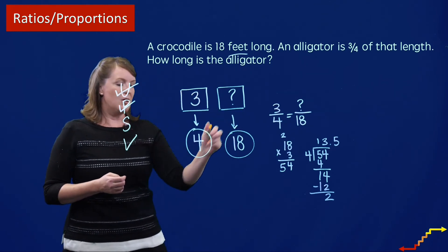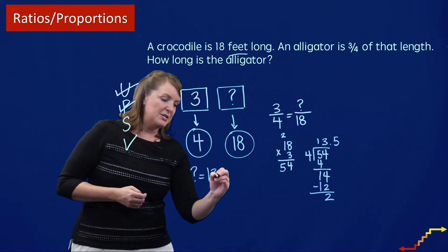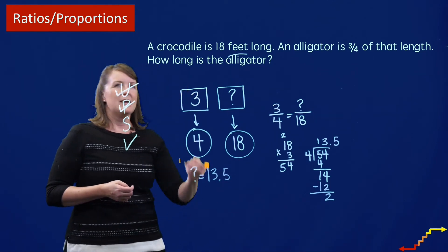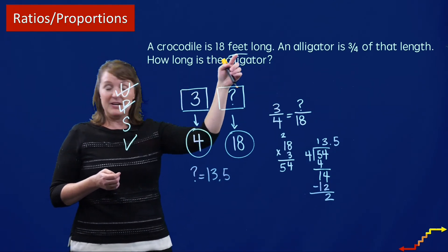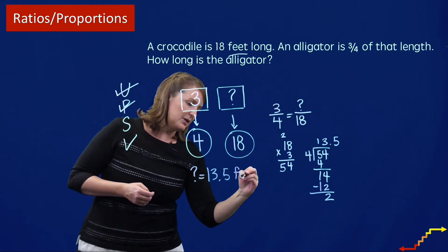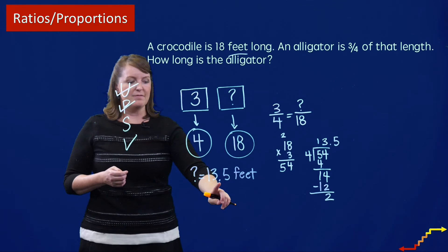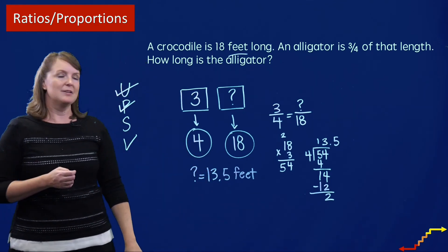And then I have a remainder of 2, which I could also interpret as 5 tenths. So how long is this alligator? The alligator is 13 and a half or 13 and 5 tenths. And was that inches or feet? Underline that a little earlier. So the alligator is 13 and a half or 13 and 5 tenths feet long.